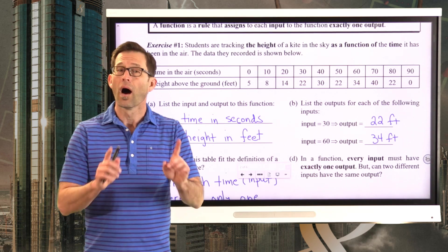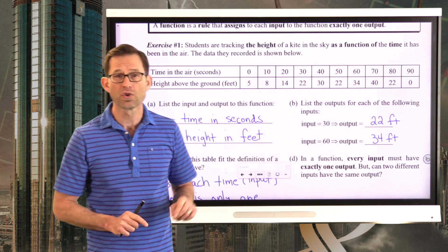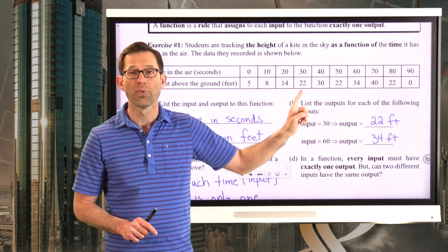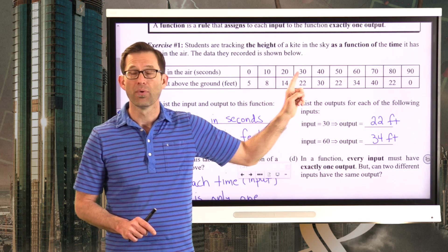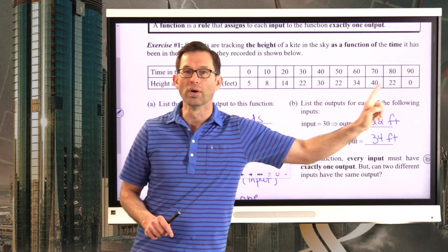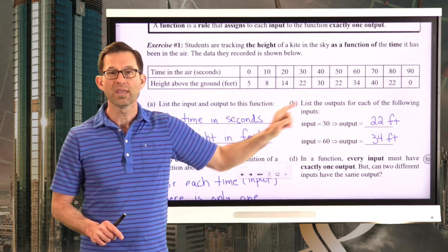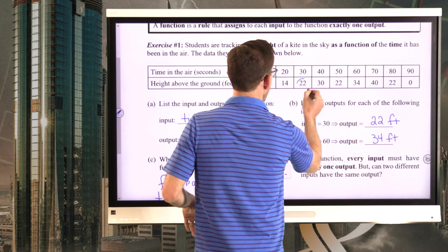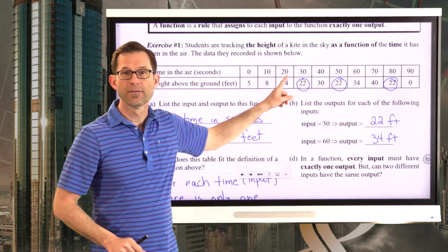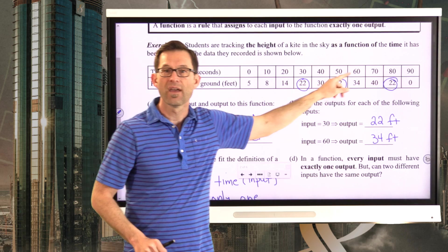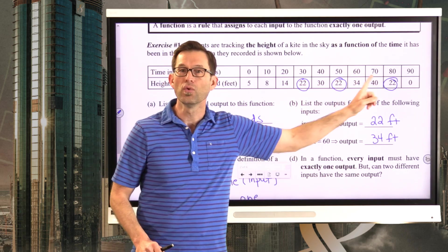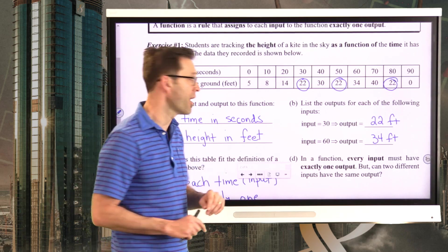Now, again, I want you to remember, the idea of a function is if I go to an input like 30, there's absolutely only one output that corresponds to that input. But when we scan this table of outputs, what we see is we see, hey, at 30 seconds, 50 seconds, and 80 seconds, the height is 22 feet.